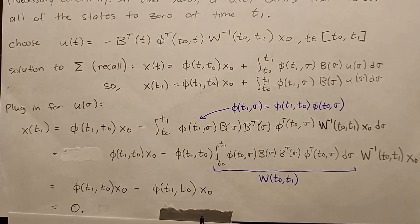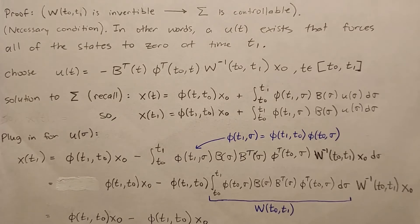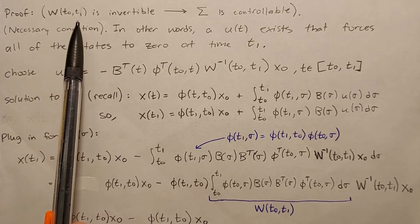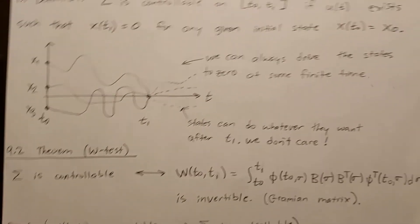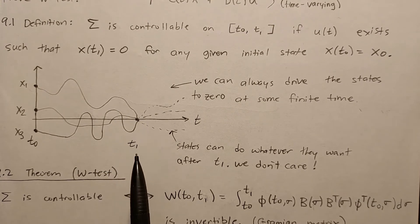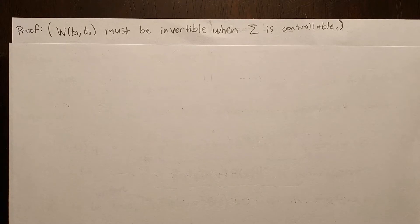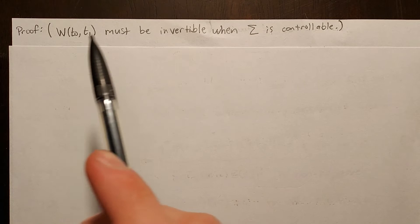And we're left with zero — so X(T1) clearly equals zero. That completes the first direction: we assumed the Gramian matrix was invertible and showed that sigma is controllable, meaning we found an input signal that sets all states to zero at finite time T1. Now for the second part of the proof, we're going to show that the Gramian must be invertible when sigma is controllable.